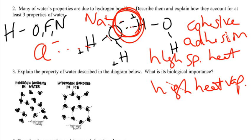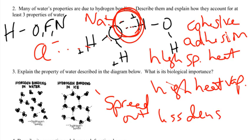Explain the property of water described in the diagram below. What is its biological importance? So showing the hydrogen bonding in water versus the hydrogen bonding in ice, this causes the molecules to be more spread out. So it is less dense when it is a solid than when it is a liquid. So here it's a liquid, here it's a solid, here it's more dense. The molecules are more closely packed. And the wild thing, if you think about that, ice floats.